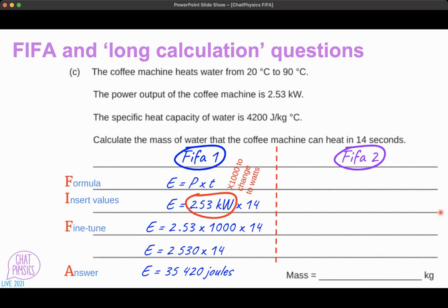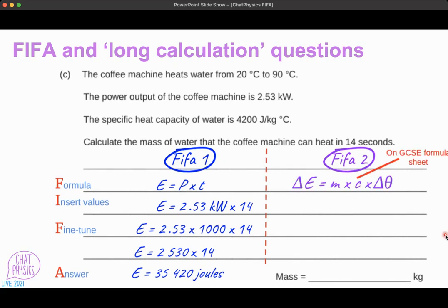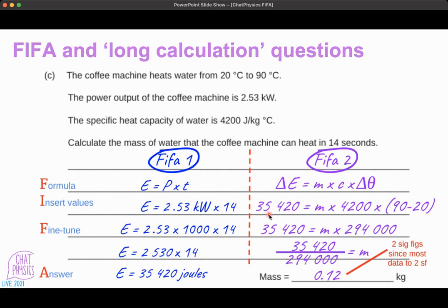So the next step is we're going to use this equation, which actually students don't have to recall because it's on the GCSE formula sheet. And we're going to substitute the values in. And this value for the energy comes from this part, of course. M is what we're trying to find. All the rest we can assess from the questions. So we go through a process similar to the one that we did before. And we get that the answer, final answer, the mass is 0.12 kilograms.